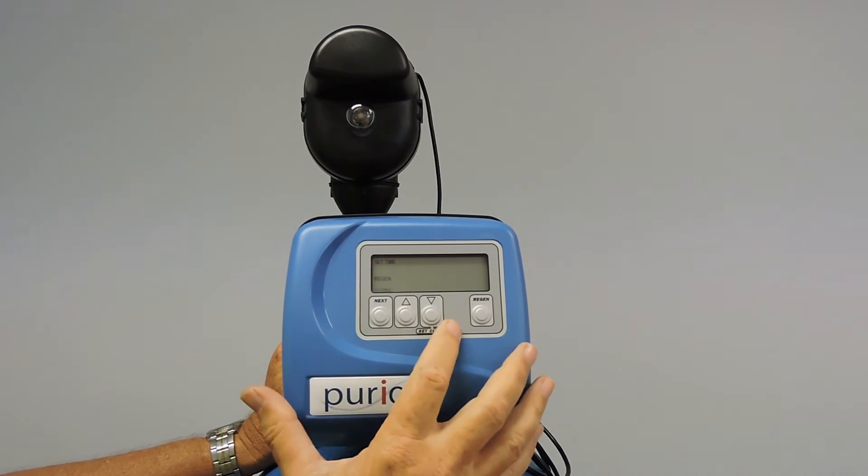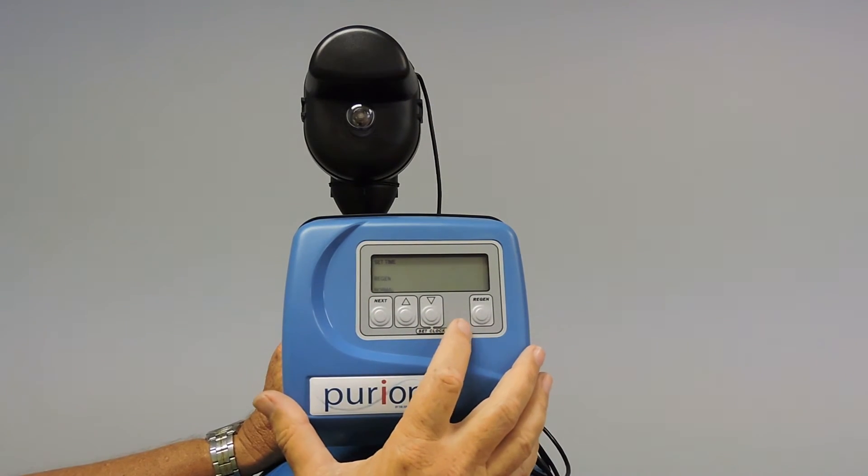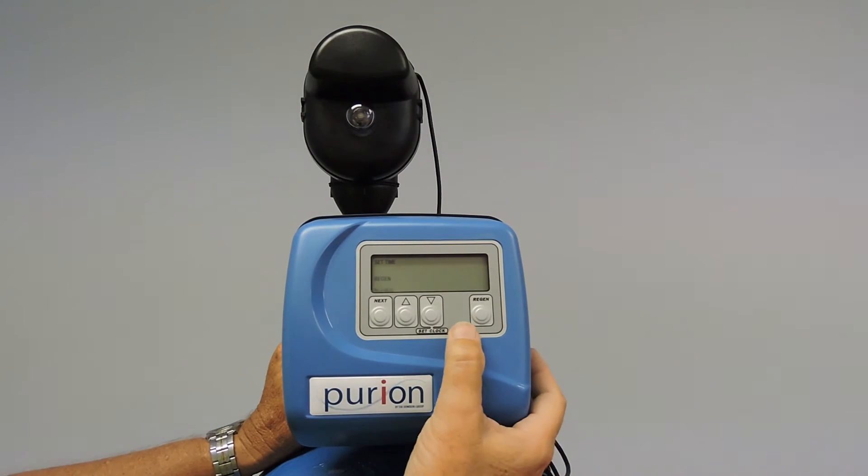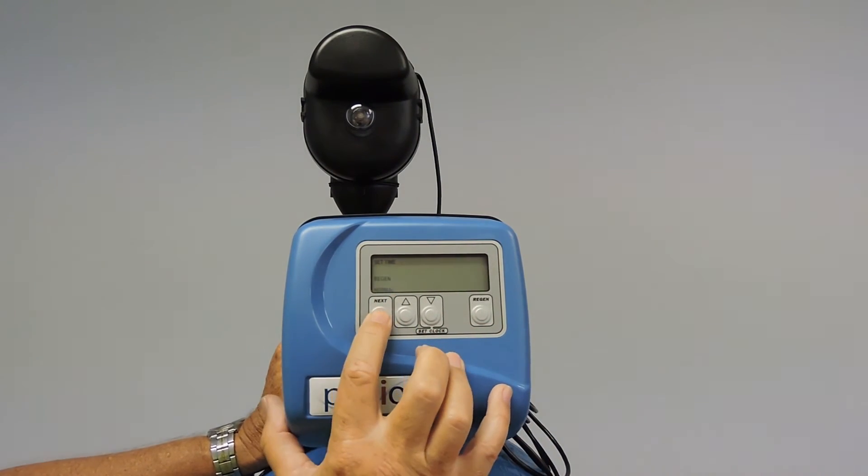So we're now at regen and we've got normal flashing. Normal indicates that we are going to regen based on its calculation, but at a predetermined time which we will set. So we will accept that one.